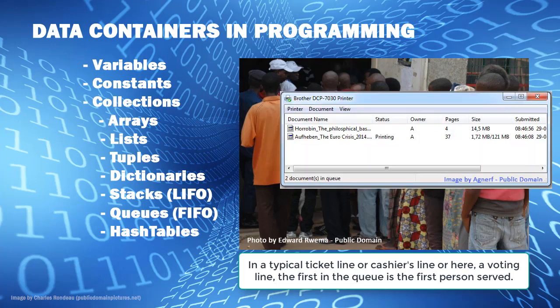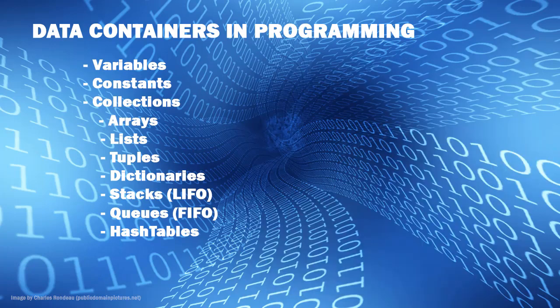Such as we might have a queue for printing — the first document in the printing queue is the first one the printer prints. And then we have hash tables. There are others too — in C# we have ArrayList, sorted list, and linked list. But these are the main ones you're going to come across in most languages.